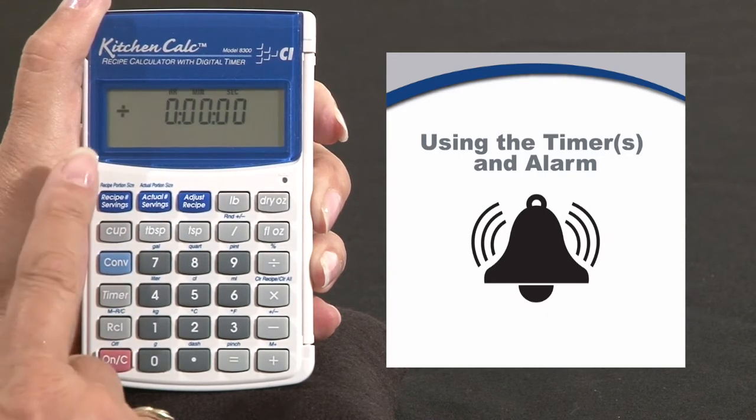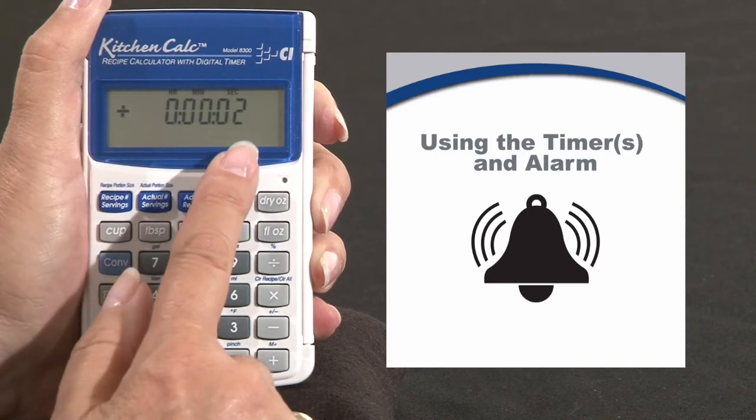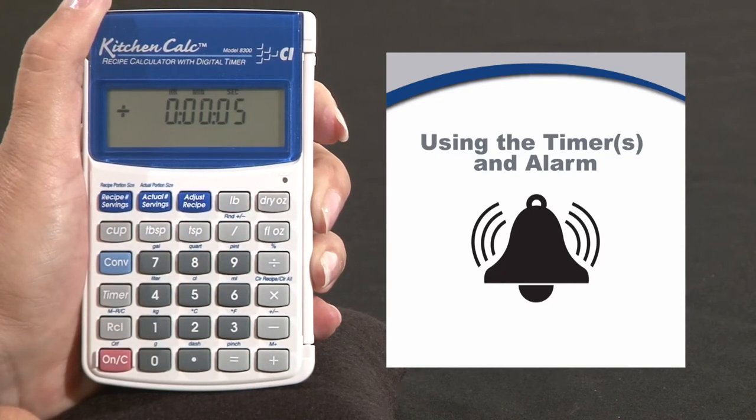Then your alarm goes off and now it's going to count up. That way it shows how long you've left it in the oven.